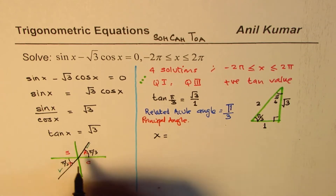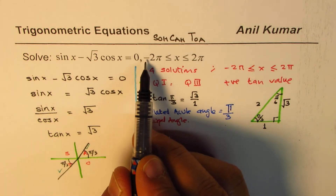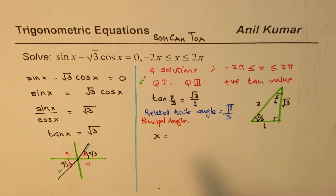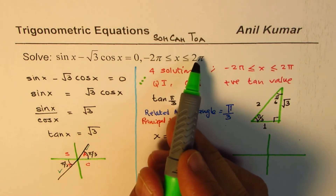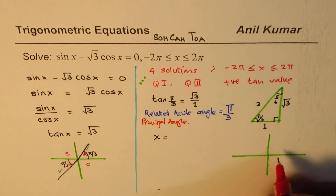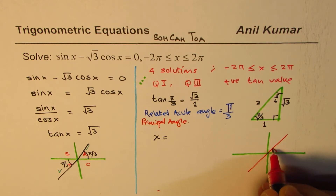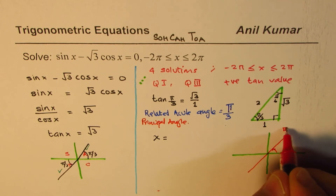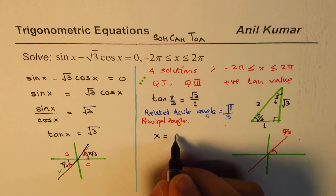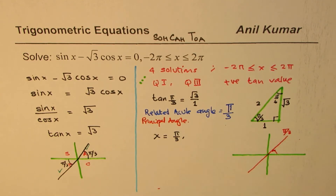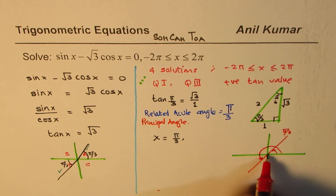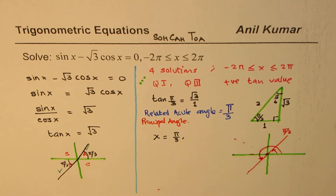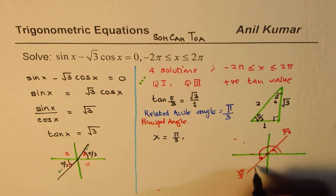We need to go from minus 2π to plus 2π. Going in the positive direction first: the first angle is π/3. The second angle — adding π to π/3 — gives us 4π/3, since there are three π/3s in π plus one more makes four π/3s, which is 4π/3. So from 0 to 2π we have π/3 and 4π/3.